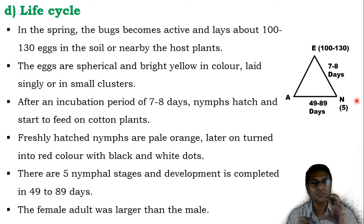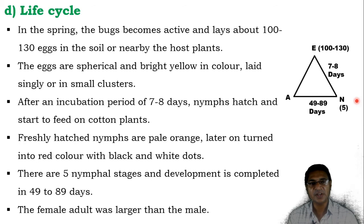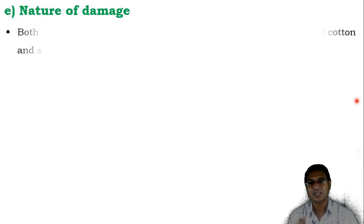The nymphs continuously feed on the plant and suck the sap. After around 49 to 89 days, the nymphs transform into adults. The female adult is generally larger than the male.